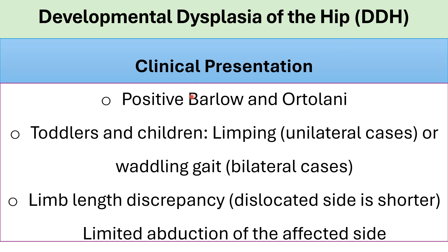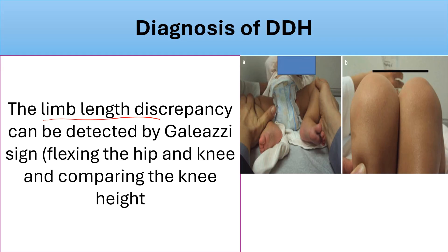Clinical presentation of DDH: positive Barlow and Ortolani in the first three months of life. In older children beginning to walk, they present with limping if unilateral, or waddling gait if bilateral. Limb length discrepancy is one manifestation — the dislocated side is the shorter side — with limited abduction of the affected side. Galezzi sign detects limb length discrepancy by flexing both hips and knees on a flat table and comparing knee heights: a lower knee on one side indicates DDH on that side.